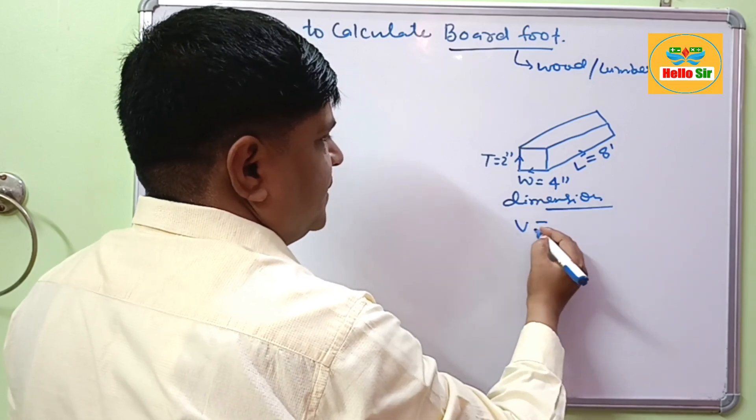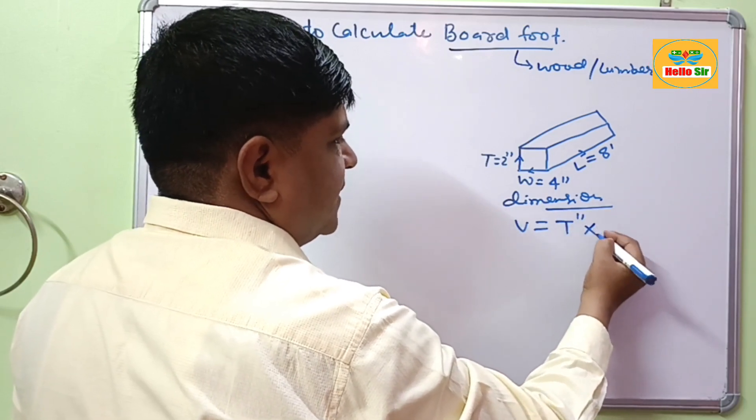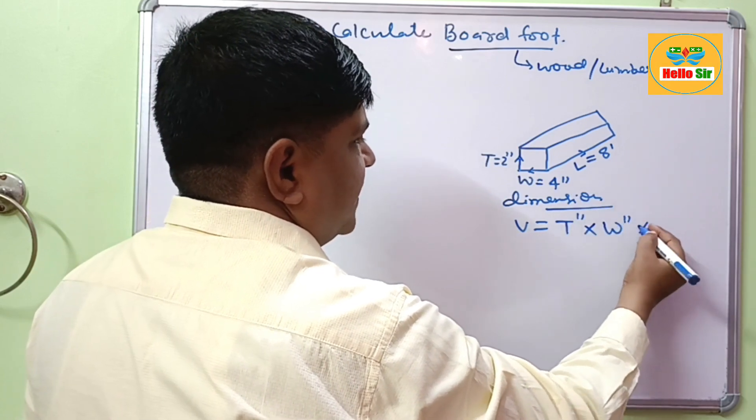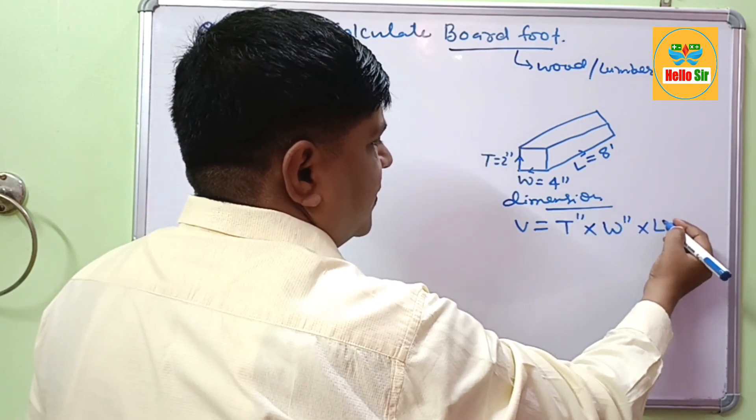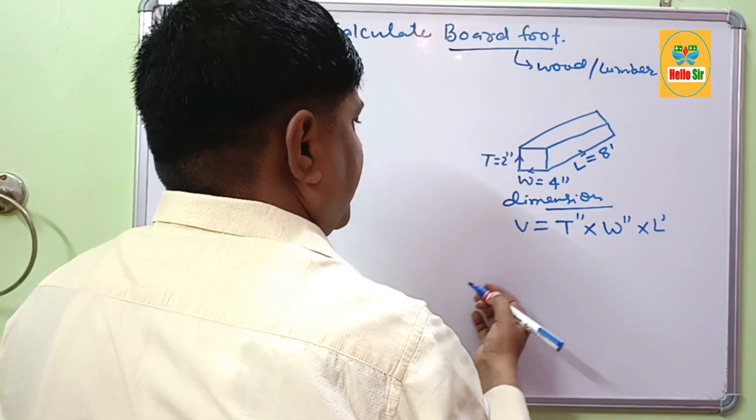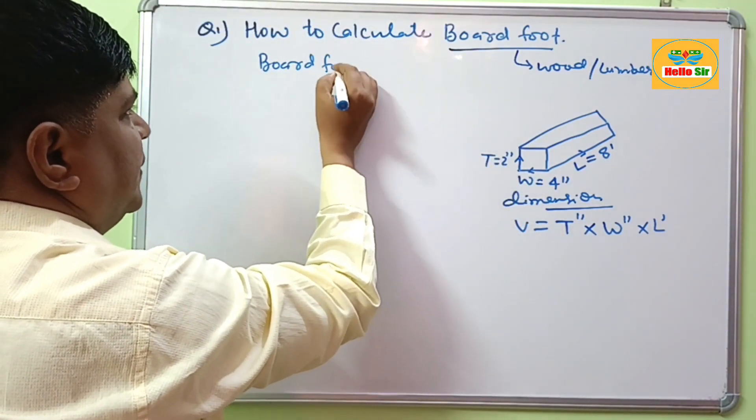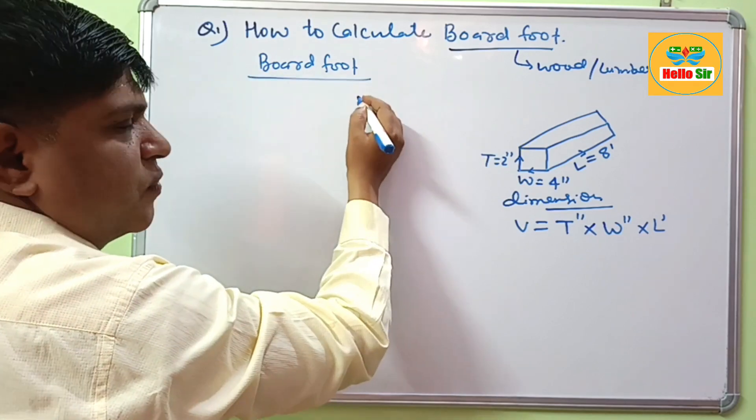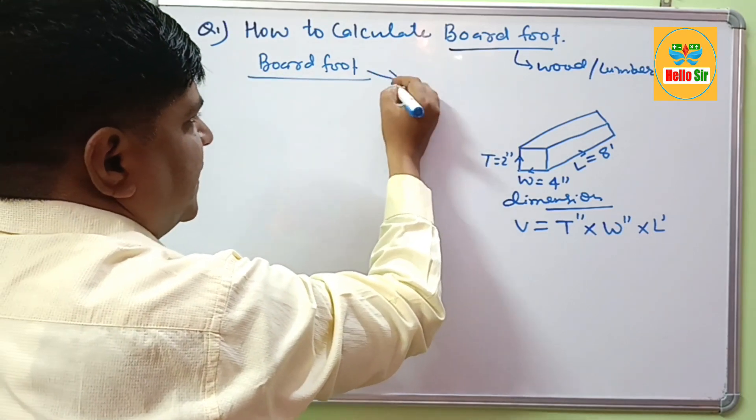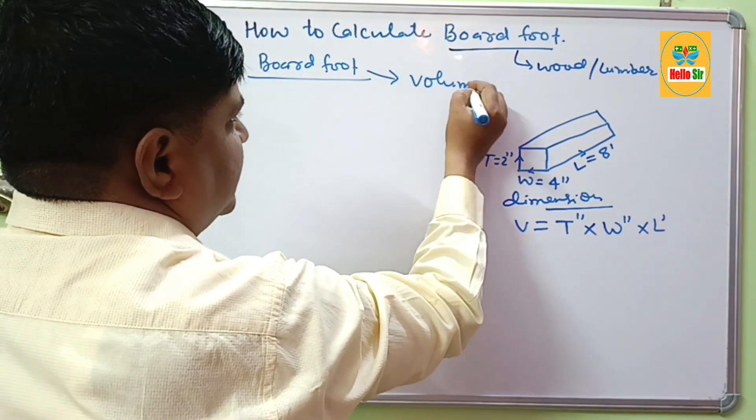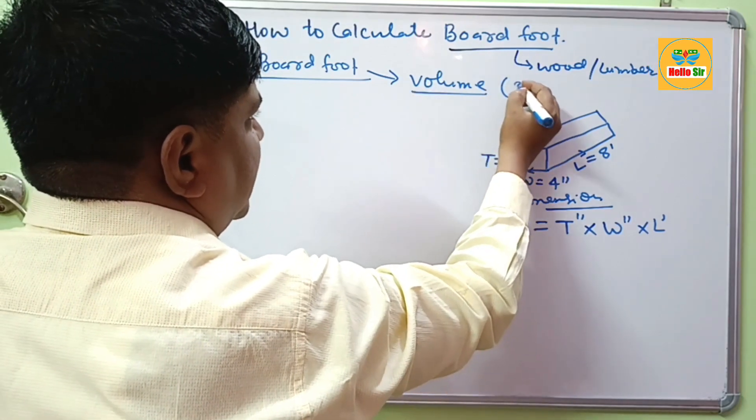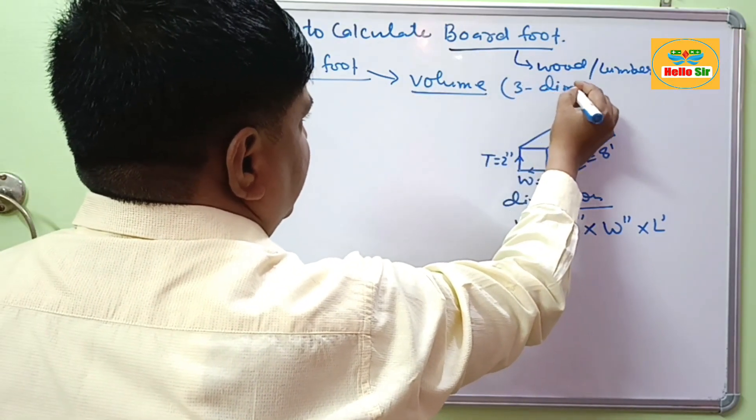Volume is equal to thickness in inches, width in inches and length in foot. And this board feet is used for measurement of quantity of wood measured in volume. It means it has 3 dimensional unit.